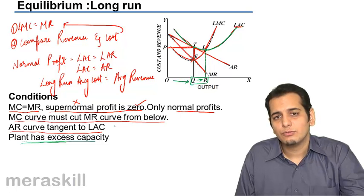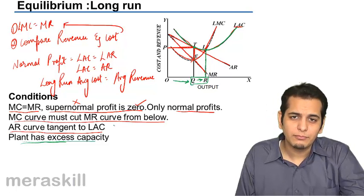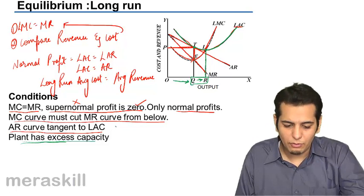Thus, this is what we have for equilibrium in long run for monopolistic competition.